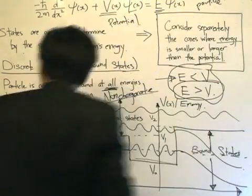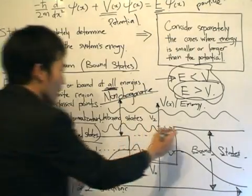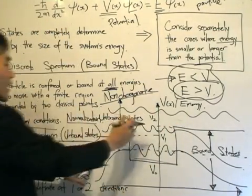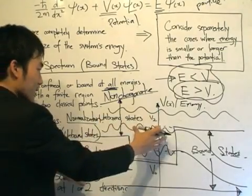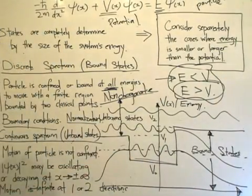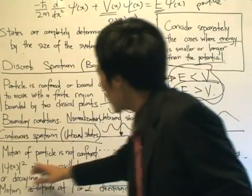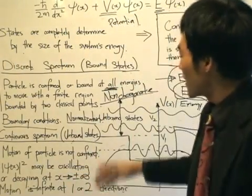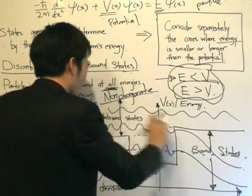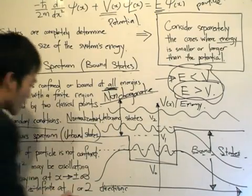For the continuous spectrum, the motion of the particle is not confined. It can go all the way to minus infinity, or in the other case, all the way from minus infinity to plus infinity. The probability density may be oscillating or decaying at x approaching plus or minus infinity, and the motion extends to infinity in one or two directions.